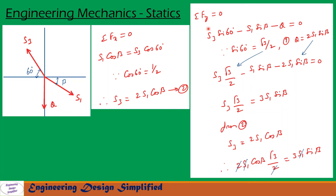Now let us see sigma Fy equal to 0 at point C. Along the y direction, Q is acting downwards and the vertical component of S1 is also acting downwards, while the vertical component of S3 is acting upwards. So we have S3 sin 60 minus S1 sin beta minus Q equal to 0. Substituting sin 60 equals √3/2 and from equation 1, Q equals 2S1 sin beta, we get S3 · (√3/2) minus S1 sin beta minus 2S1 sin beta equal to 0, which simplifies to S3 · (√3/2) equal to 3S1 sin beta.